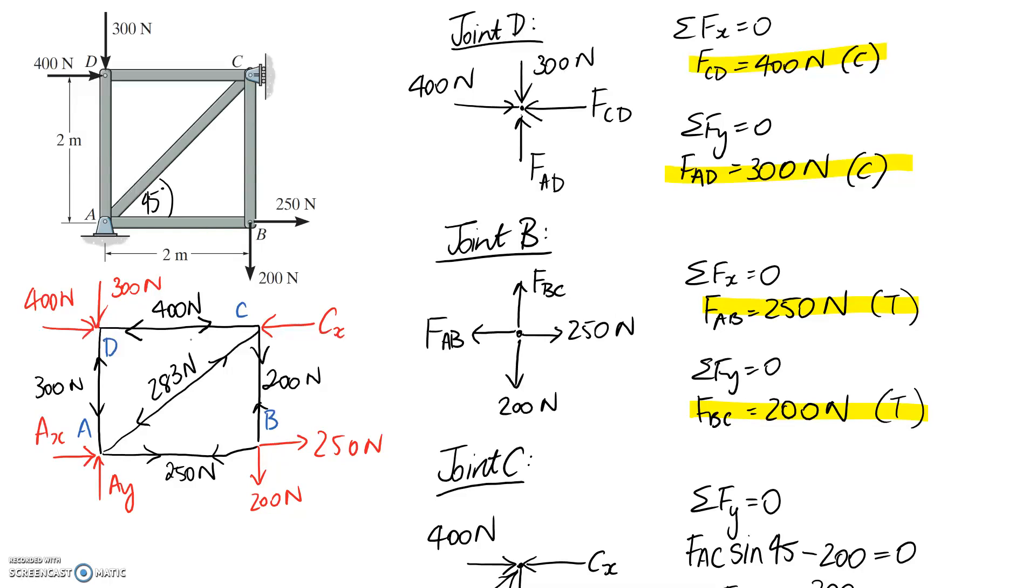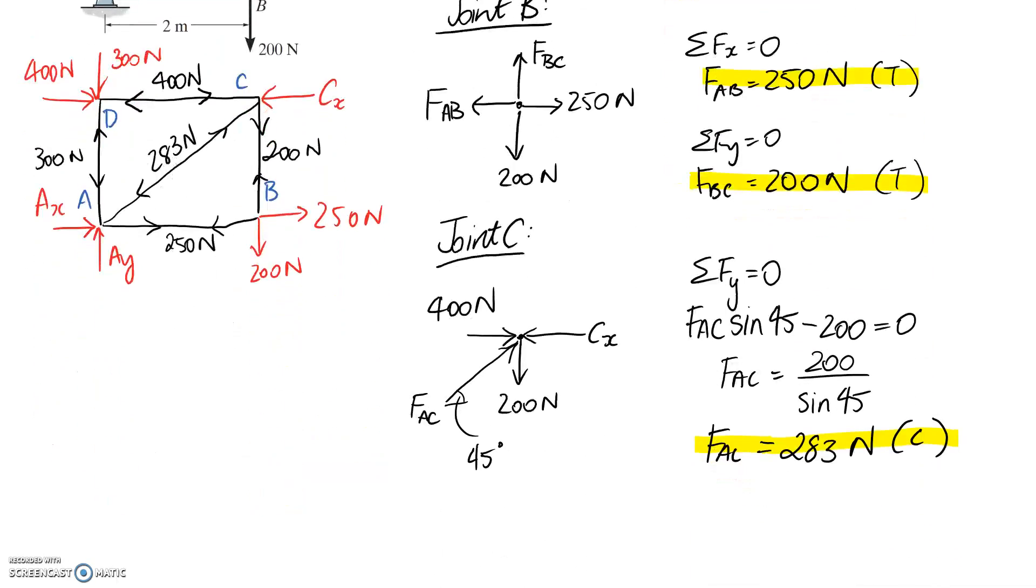So that's the final answer for the question. We've labeled all of our different members. It didn't ask us to find what the support reactions were, so CX, AY, and AX. But of course, if you wanted to, you could absolutely do it. Again, it would just be a case of picking out what's happening at the joint. We've already got CX could be solved off this diagram here. If you drew the joint down here, you would be able to get AX and AY.